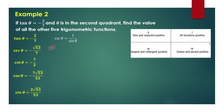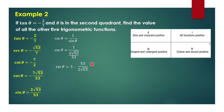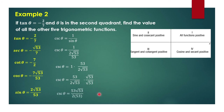For cosecant, we use the reciprocal identity: 1 over sine theta. So we have 1 over 2 square root of 53 over 53. Getting the reciprocal gives us 53 over 2 square root of 53. To rationalize, we multiply by square root of 53 over square root of 53, and cosecant theta equals square root of 53 over 2, since the 53s cancel.